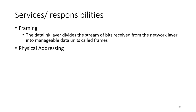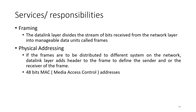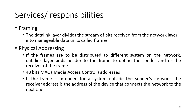The next service is physical addressing. If frames are to be distributed to different systems on the network, the data link layer adds a header to the frame to define the sender and/or receiver. This is done with the help of a 48-bit MAC (media access control) address, also known as a physical address. If the frame is intended for a system outside the sender's network, then the receiver address is the address of the device that connects the network to the next node.